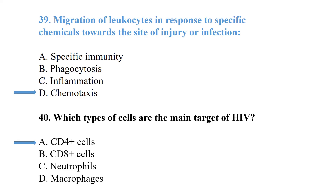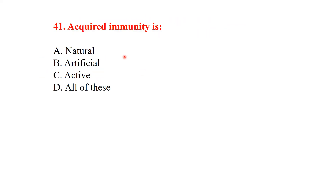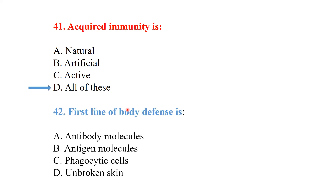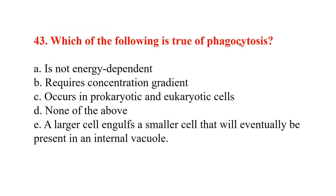The main target cells of HIV are CD4 cells. Acquired immunity may be natural or artificial, and may be active or passive — all of these are correct. The first line of body defense is unbroken skin.